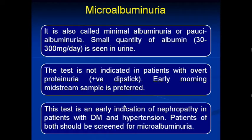The next type is microalbuminuria, also called minimal albuminuria or pauci-albuminuria. Small quantities of albumin ranging from 30 to 300 mg per day are seen in urine. This is minimal proteinuria. The test is not indicated in patients with overt proteinuria but is performed when the dipstick test is positive. Early morning midstream sample is preferred for testing protein in urine.